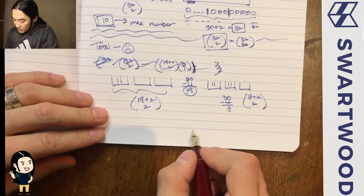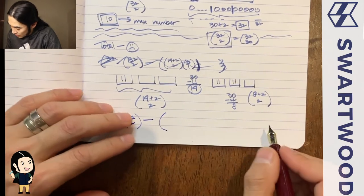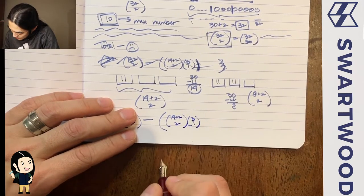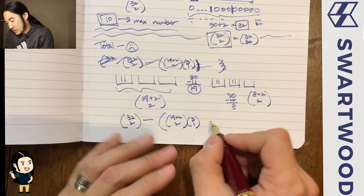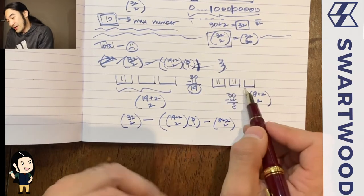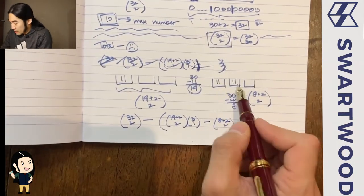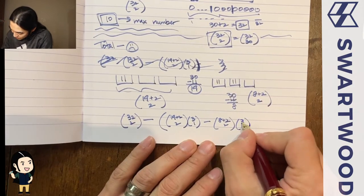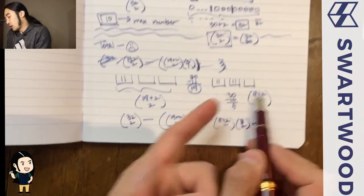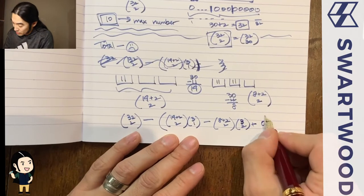So putting it all together: total ways = 32 choose 2, minus 3 times (21 choose 2) for single-urn violations, plus 3 choose 2 times (10 choose 2) for double-urn violations. As for the triple intersection — that would require at least 11 + 11 + 11 = 33 balls, but we only have 30, so that's impossible.